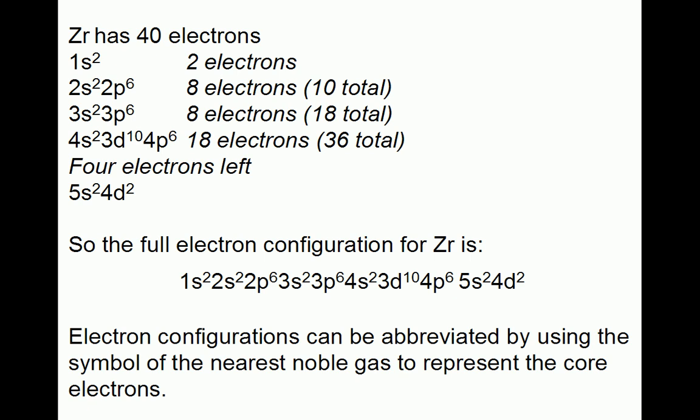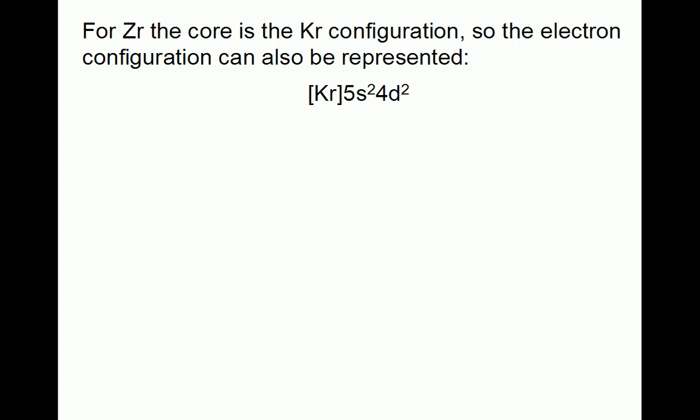So the full electron configuration for zirconium can be abbreviated by using the symbol of the nearest noble gas. For zirconium, the core is the krypton configuration. So the electron configuration can also be represented as krypton core 5s2, 4d2. So the correct answer is choice C.